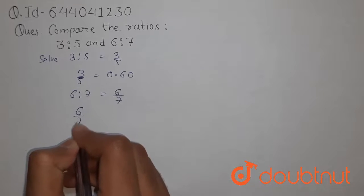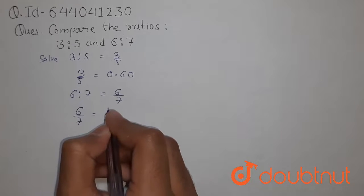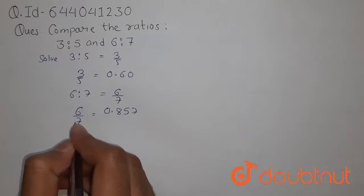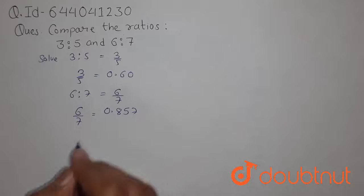Value of 6 upon 7 is 0.857. We have divided 7 to 6. We get this value.